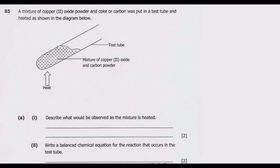Question B5: a mixture of copper 2 oxide powder and coke or carbon was put in a test tube and heated as shown in the diagram below. We have the test tube with a mixture of copper 2 oxide and carbon powder, and a source of heating. Question A: describe what would be observed as the mixture is heated.